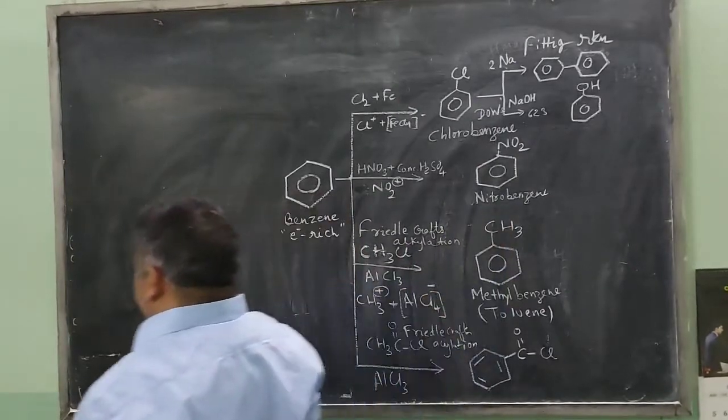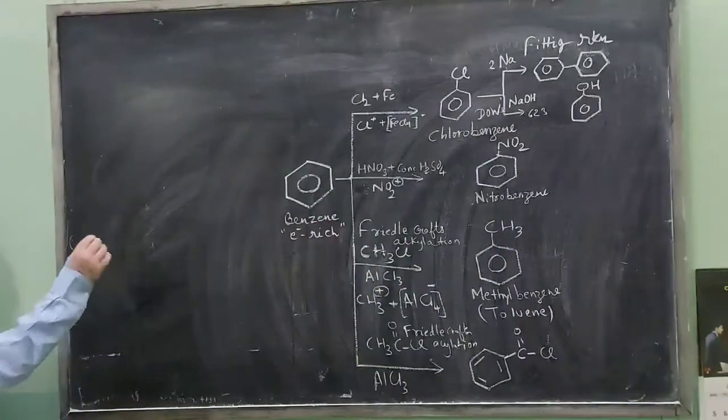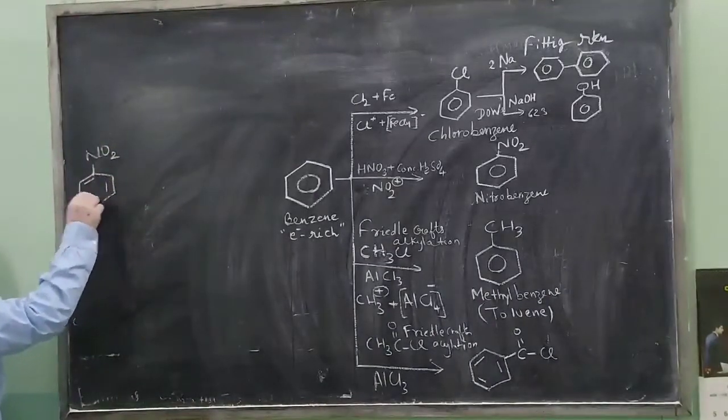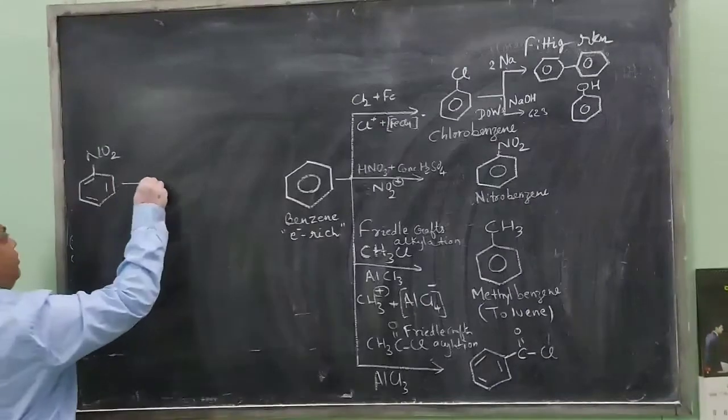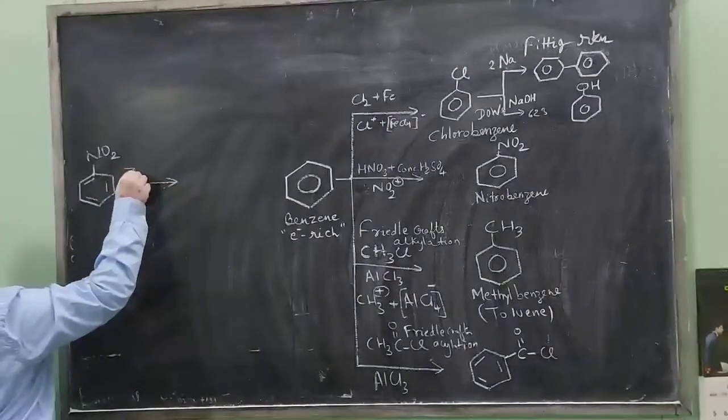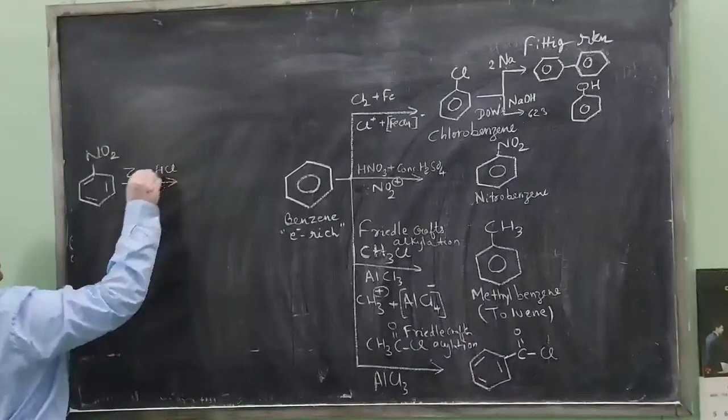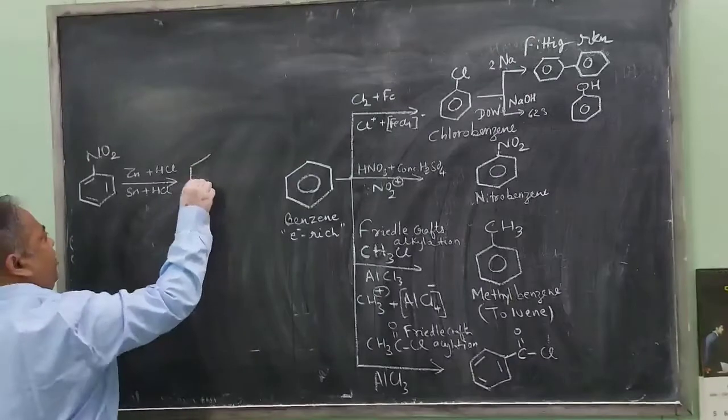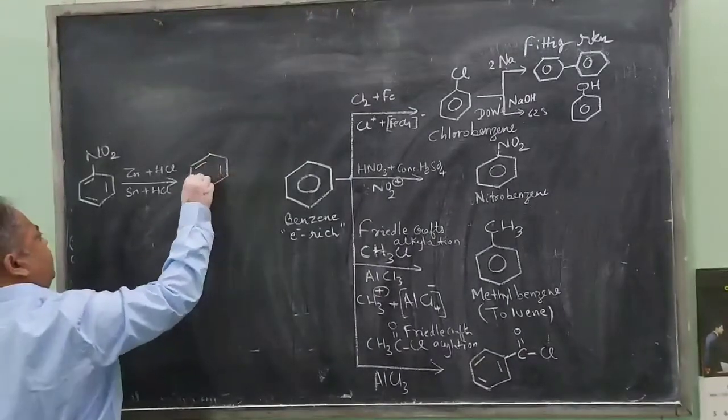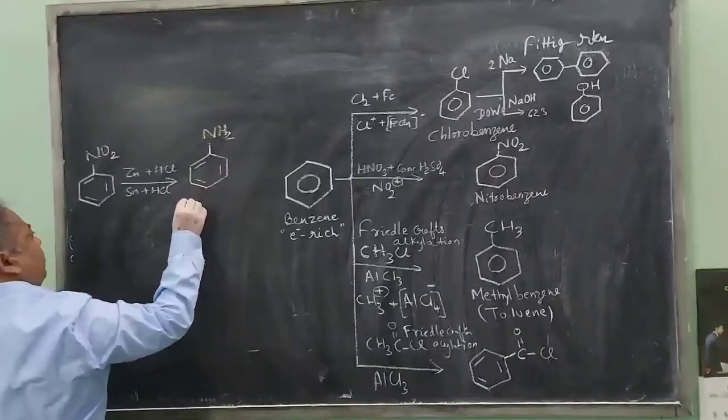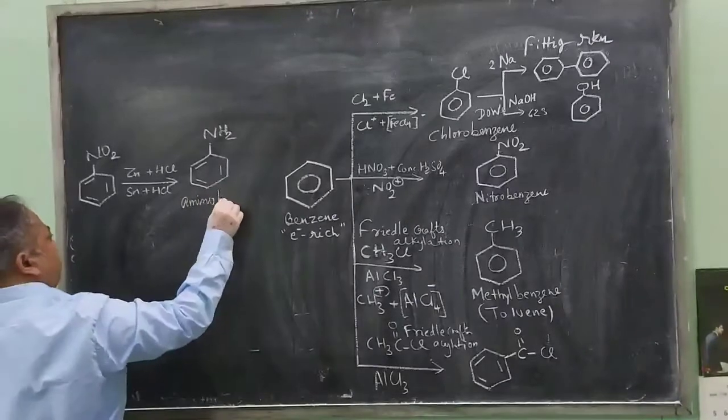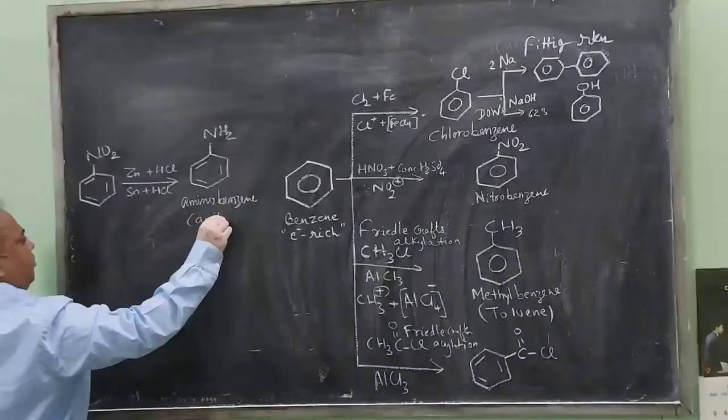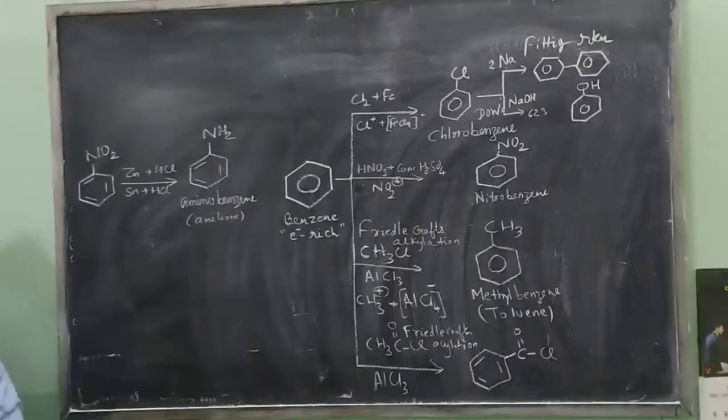This nitrobenzene, let me take this molecule this side because I don't have much space. Nitrobenzene, if it is reduced by any reagent, we can take zinc plus HCl or tin plus HCl, any metal plus HCl, then nitrogen gas will come out and will form aminobenzene. It will be its IUPAC name, aniline its common name.